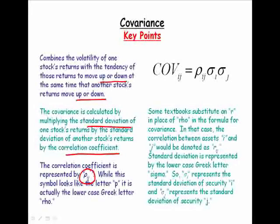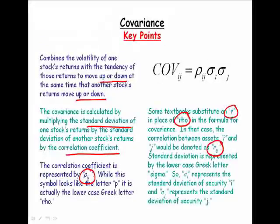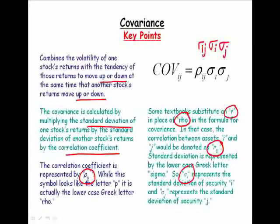Please be advised that in some textbooks, authors substitute an R in place of rho, because it does look like an R. In that case, the correlation between assets I and J would be denoted as R sub IJ. Correlation is often represented by the Greek symbol rho or by the lowercase R — so these two terms would be identical. Sigma I represents the standard deviation of security I, and sigma J represents the standard deviation of security J.